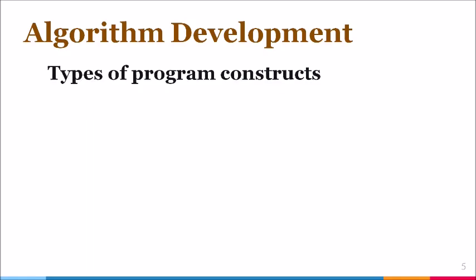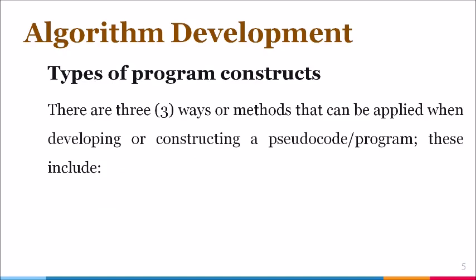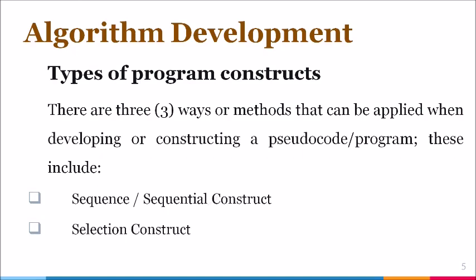Types of program constructs. There are three ways or methods that can be applied when developing or constructing a pseudocode or program. These include sequence or sequential construct, selection construct, and repetitive or iteration constructs.